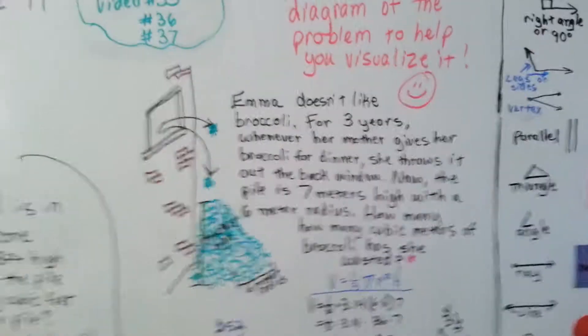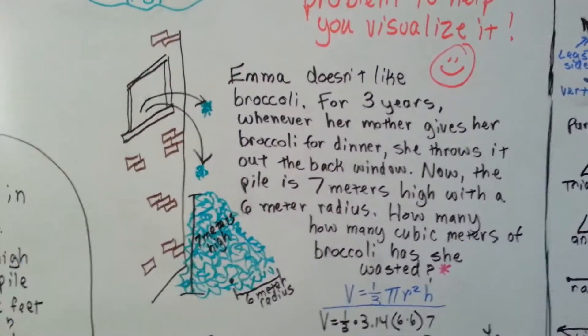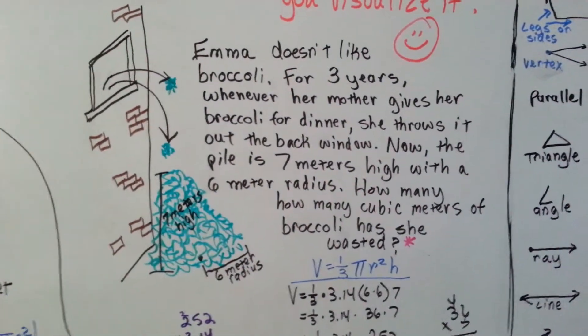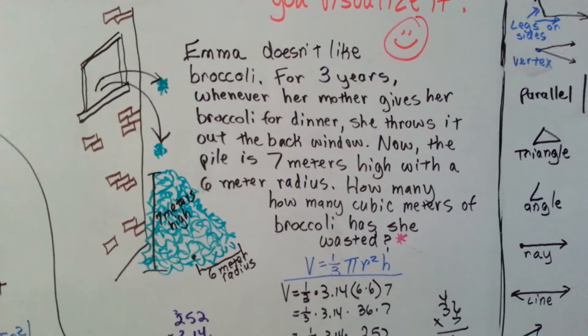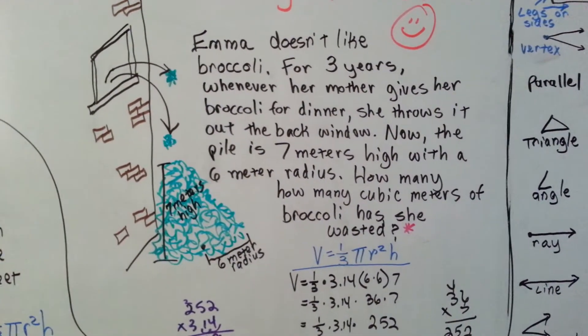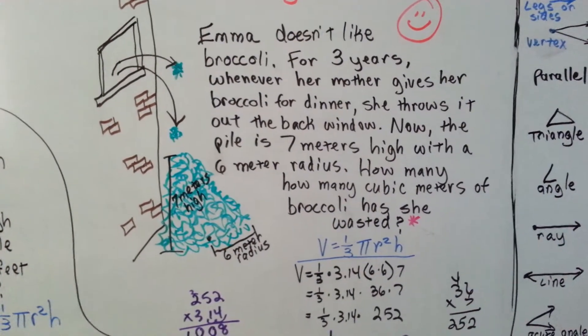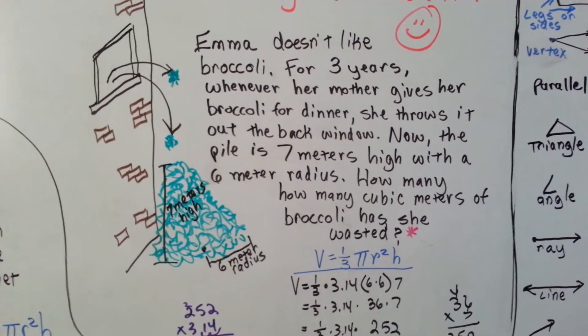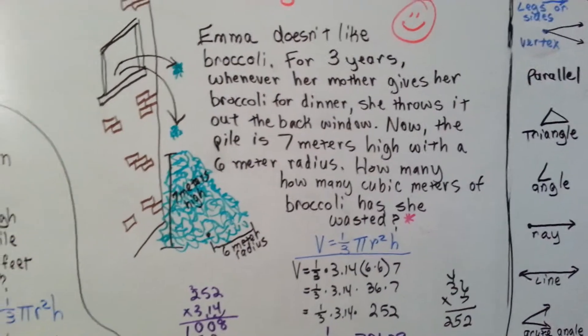Okay, so now for a little fun. Emma doesn't like broccoli. And for 3 years, whenever her mother gives her broccoli for dinner, she throws it out the back window. Now, the pile is 7 meters high with a 6 meter radius. How many cubic meters of broccoli has she wasted? My goodness.